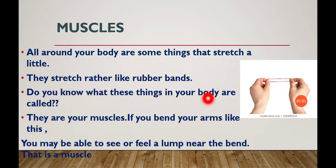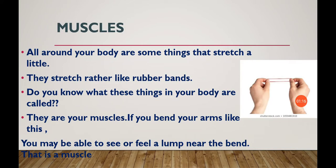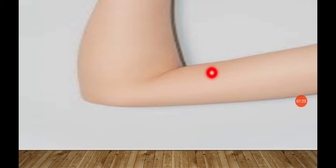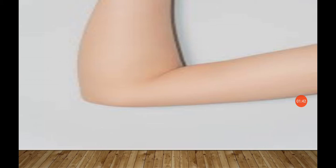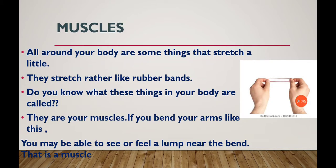Do you know what these things in your body are called? They are your muscles. If you bend your arms like this, you may be able to see or feel a lump near the bend — that is a muscle. If you do not add muscle in your body when you are growing up, your body needs muscles. You can bend your arms and feel a small piece of muscle.